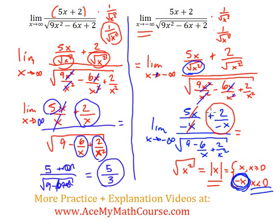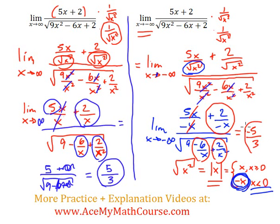The 5x and negative x cancel, giving 5 over negative 1, which is negative 5. As x approaches negative infinity, 6 over x and 2 over x² both approach 0, so we're left with negative 5 over the square root of 9, which is 3. So the limit as x approaches positive infinity is positive 5/3, and the limit as x approaches negative infinity is negative 5/3.